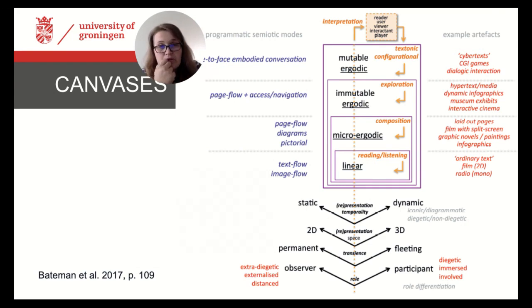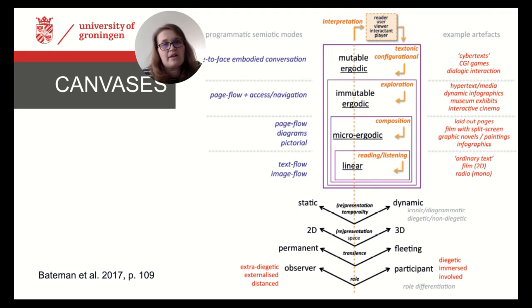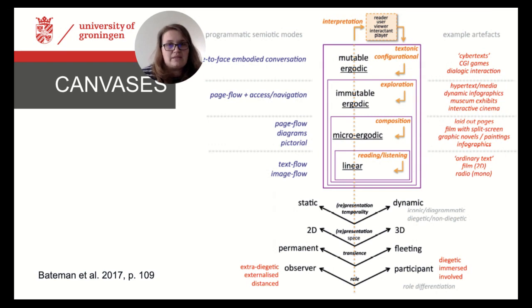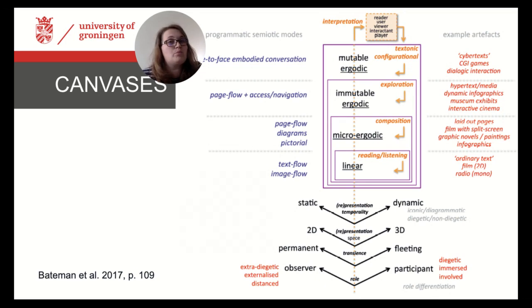When these three conditions for a communicative situation are met, we can take this complex systematics of communicative situations — as you can see here — to categorize and characterize each communicative situation and the materialities it involves for all further analysis. With this systematics, we address the canvas of the communicative situation in question. We describe this canvas as either static or dynamic, two or three-dimensional, permanent or fleeting, and including participants or only observers. We also distinguish the different situations from each other according to the effort one has to put into the interpretation of the canvas.